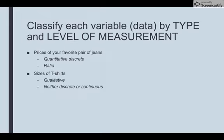If it's qualitative, the level of measurement is either going to be nominal or ordinal. In this case, it is ordinal because there is that sense of order – small, medium, large, extra-large. We go from smallest to larger, so it is ordinal.